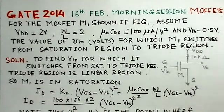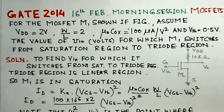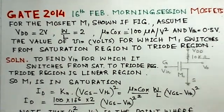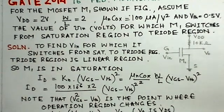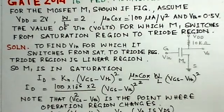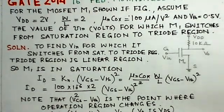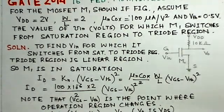We will assume this VGS minus V threshold itself as V0. So, we assume that VGS minus V threshold is the asset V0. Then, this equation is written as ID is 100 times 10 to the power of minus 6 V0 squared. This is one equation.